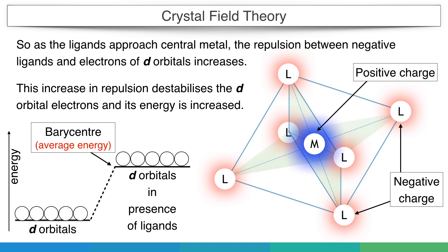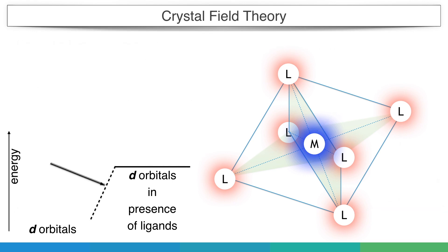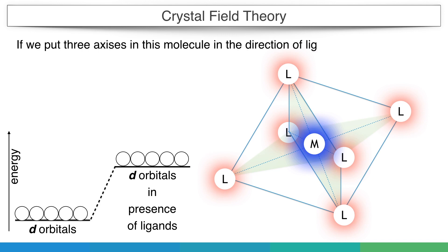Even if different d orbitals experience different repulsion, the average energy or barycenter remains constant. If we place three axes in this molecule in the direction of ligands, then the effect of repulsion is more clear.